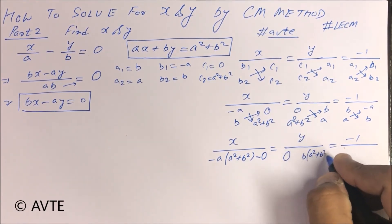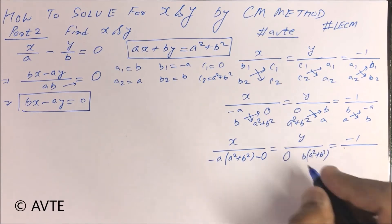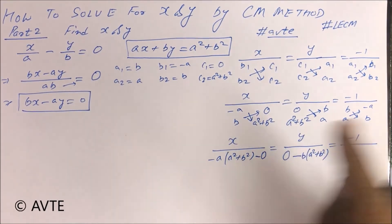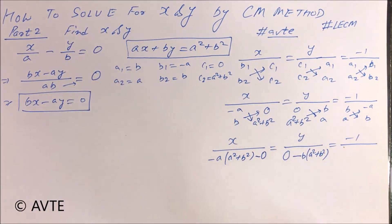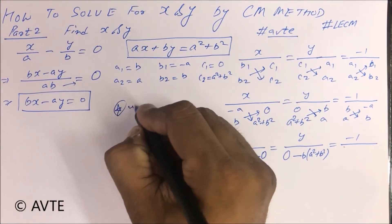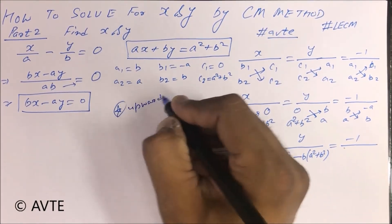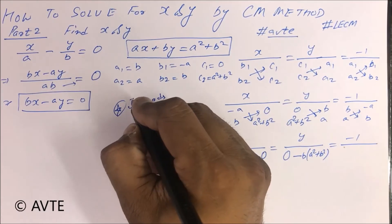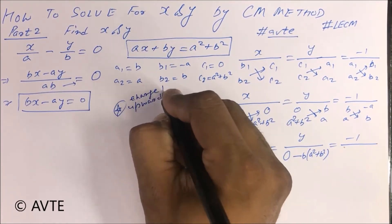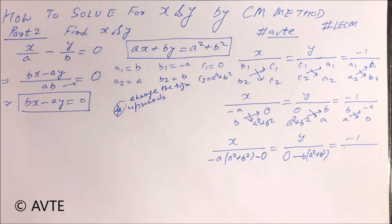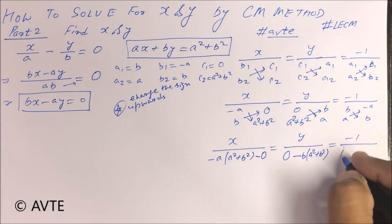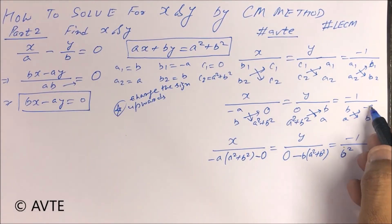Okay, B into B is B square, and A into minus A is minus A square, but you have to put plus. This is your X minus A, this is your Y minus B, A square, B square,